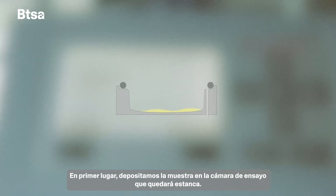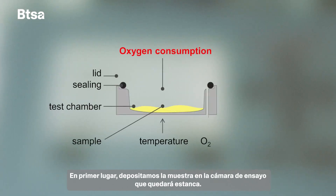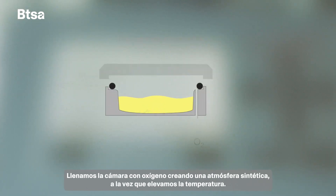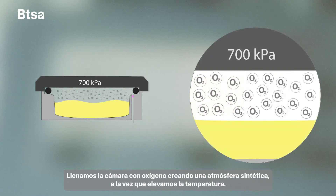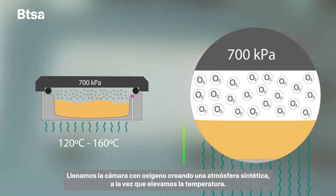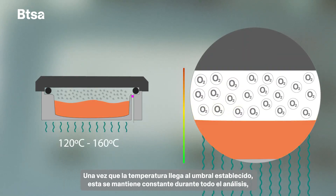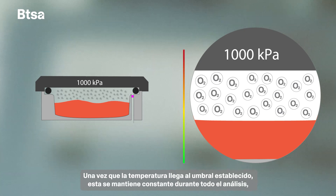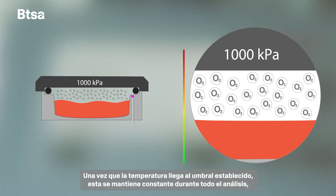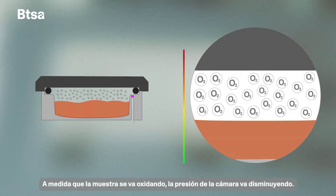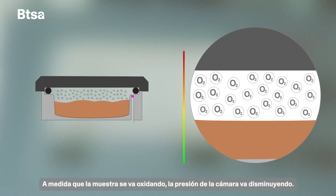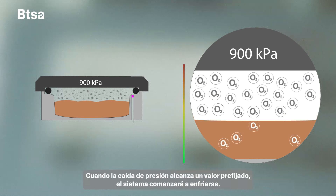First, we deposit a sample inside the test chamber, which will later be sealed. We fill the chamber with oxygen, creating a synthetic atmosphere, while raising the temperature. Once the temperature reaches the established threshold, it remains constant throughout the analysis, measuring the oxygen pressure at all times.